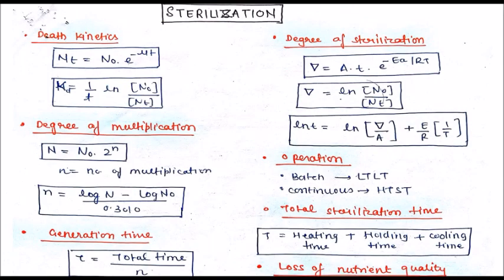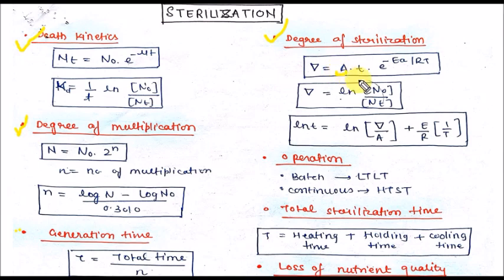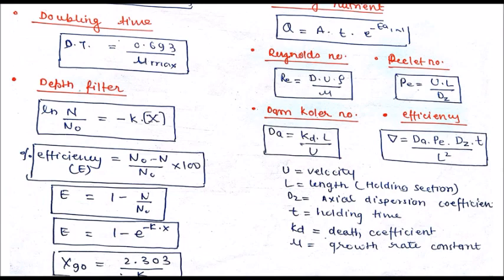Let's come to sterilization. Here is the death kinetics formula; you can calculate the degree of multiplication with this formula, generation time with this formula, and degree of sterilization with this formula. The Arrhenius constant uses Ea as activation energy, R as gas constant, and T as absolute temperature. Total sterilization time is calculated as heating time plus holding time plus cooling time.